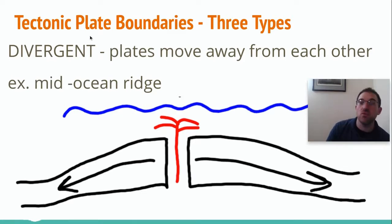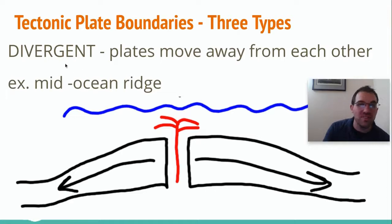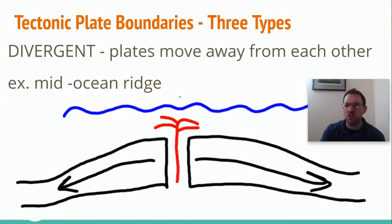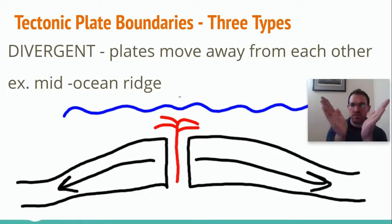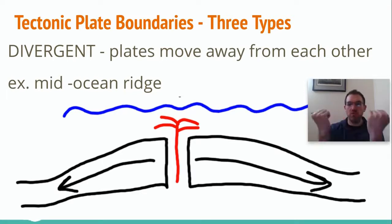There are three major types — I'd like you to write them all down. The first one we're going to discuss is called the divergent boundary. To diverge means to split into two, so divergent is when the two plates move away from each other.